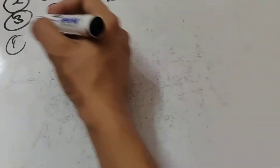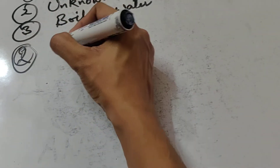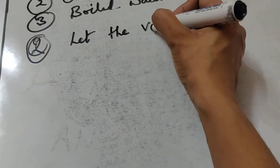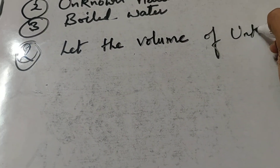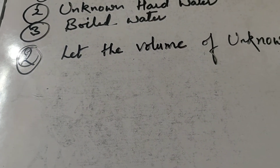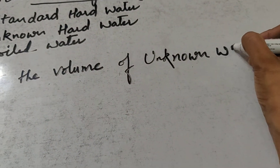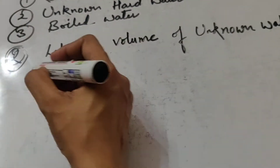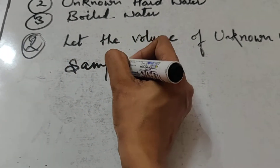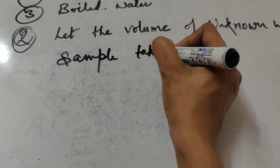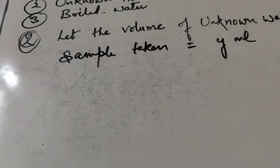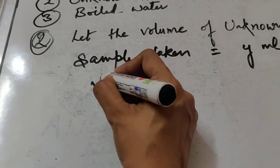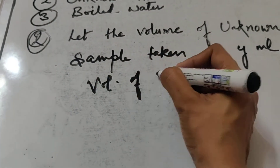In the second step, you take the unknown water whose hardness has to be determined. Let the volume of unknown water sample taken be Y ml — standard hard water was X, so let this be Y ml.